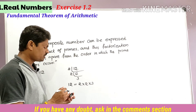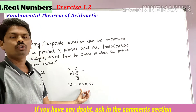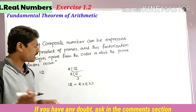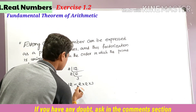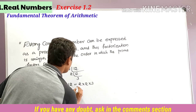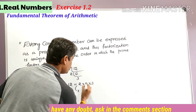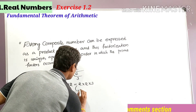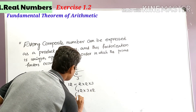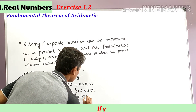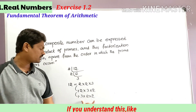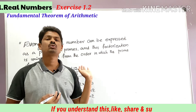Apart from the order, the prime factorization is unique. We can write it as 2 × 2 × 3, or 2 × 3 × 2, or 3 × 2 × 2 — irrespective of the order of prime factors, this factorization is unique.